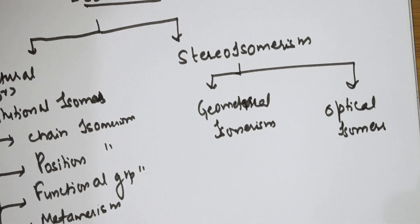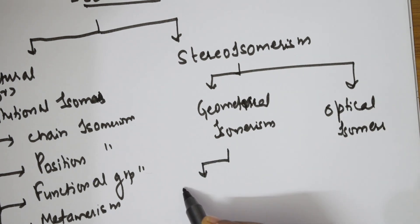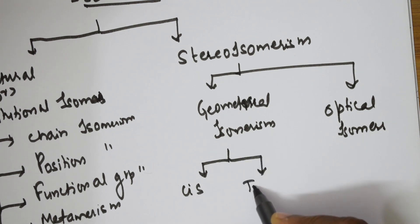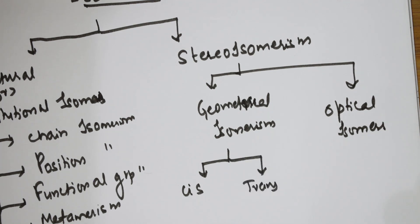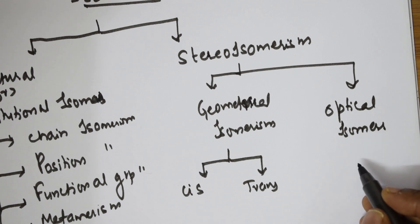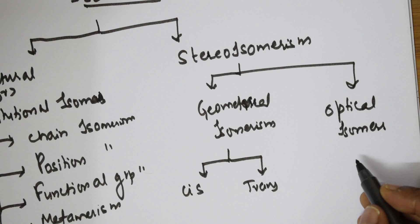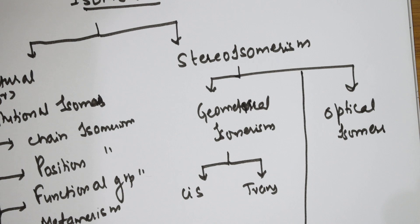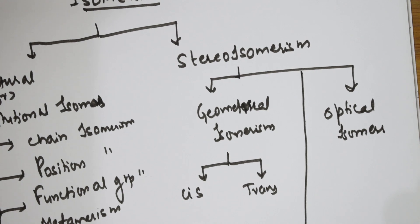Geometrical isomerism is again divided into two types: cis isomers and trans isomers. Optical isomers are again divided into enantiomers and diastereomers. There is also one more category of stereoisomerism — conformations.